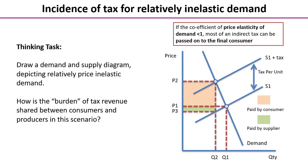Here is our pre-prepared answer. In this case you should be able to see that the change in price from P1 to P2 is much greater than it was when demand was price elastic. The consumer incidence — that top box — is much larger than the producer incidence, which is the bottom shaded area. When the coefficient of PED is less than one, in other words when price elasticity of demand is inelastic, quantity demanded is not responsive to a change in price, so most of that indirect tax gets passed on to the final consumer.